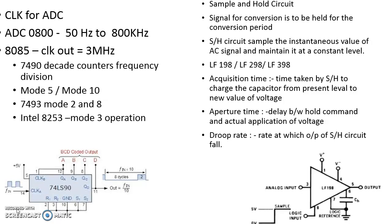The clock frequency is 50 to 80 kHz. The first method is to use the microprocessor, where the clock output frequency is set by frequency division. The second method is to use the 7493 binary counter in mode 16 and mode 8. The third method is to use the 8253 programmable counter interval timer in mode 3.